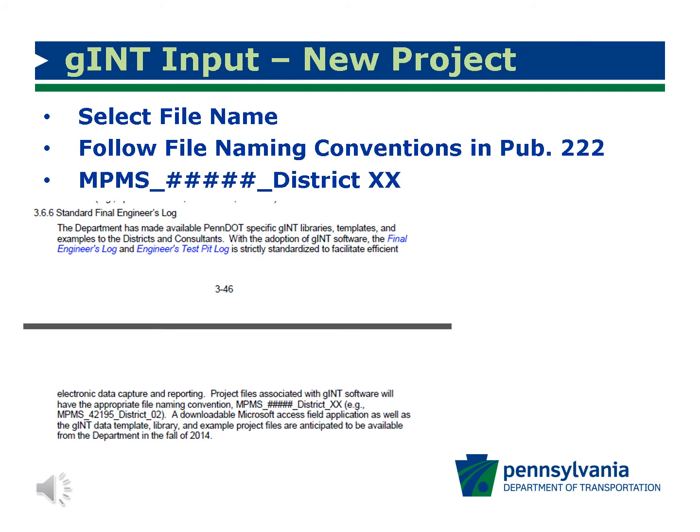When you are creating a PennDOT Gint project file, please follow the file naming convention in Publication 222. The file naming convention was established to prevent duplication of file names and overwriting of files when they are upsized to the database. The MPMS number is the unique identifier for PennDOT projects and is assigned when the funds are allotted for the project. For recent projects, the ECMS number should be identical to the MPMS number. For projects established several years ago, be aware that the MPMS number and the ECMS number may be different.